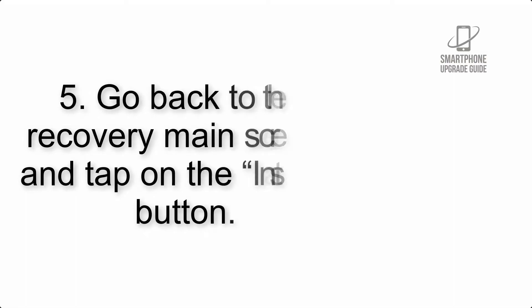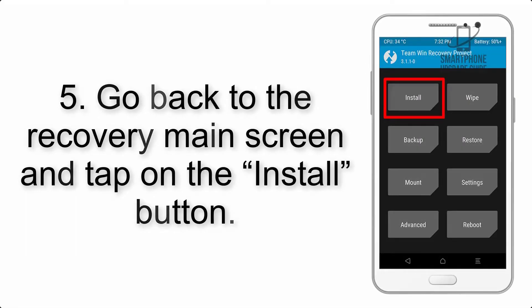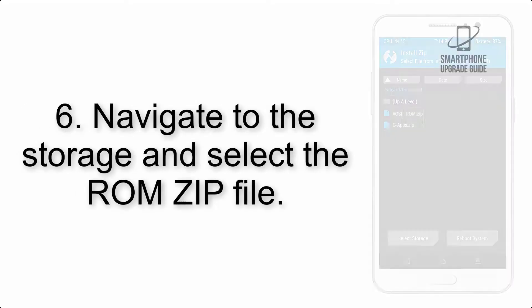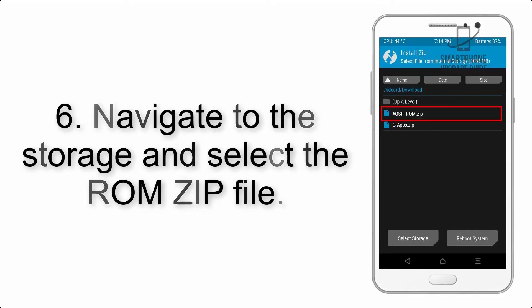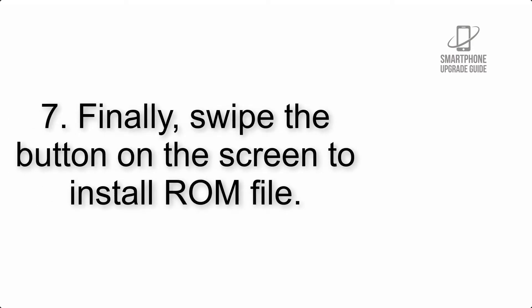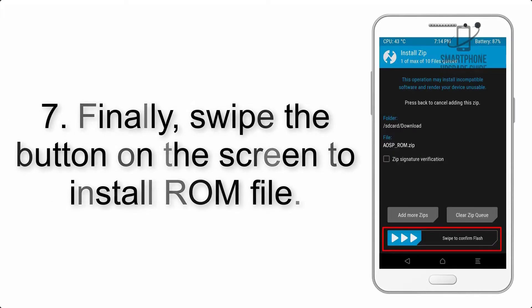Step 4: Swipe the button to wipe the device. Step 5: Go back to the recovery main screen and tap on the Install button. Step 6: Navigate to the storage and select the ROM zip file.